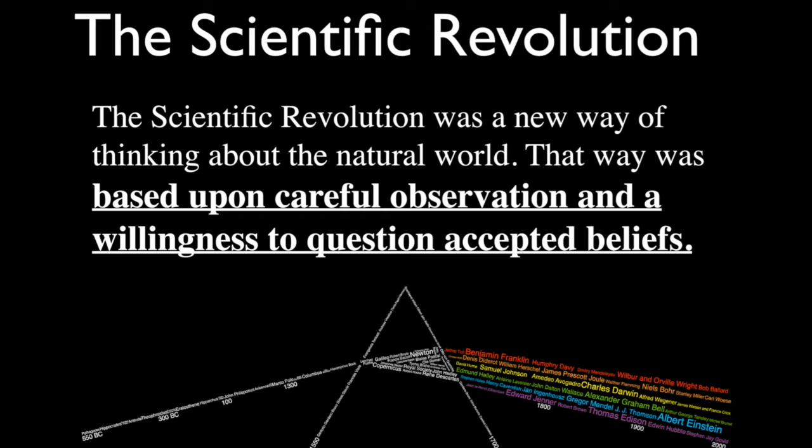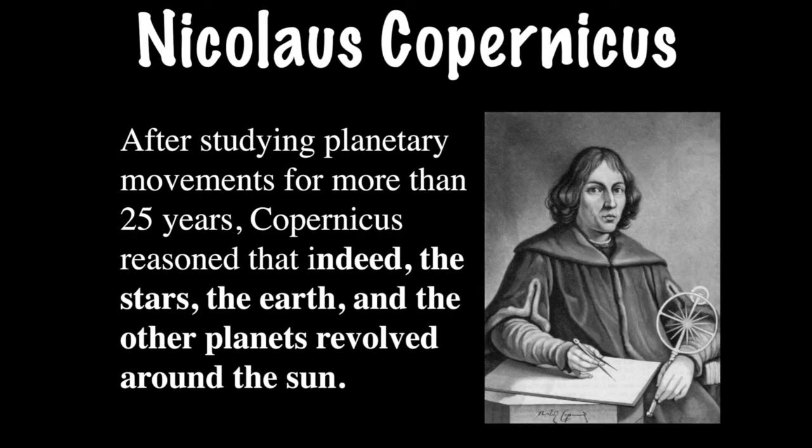The Scientific Revolution was a new way of thinking about the natural world. That way was based upon careful observation — that's key — and questioning already accepted beliefs to see if they're true, and if they're not true, finding out what is true. Now we're going to look at a few key characters, starting with Copernicus.